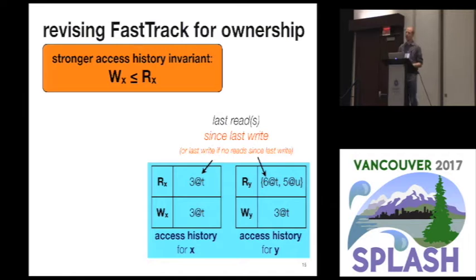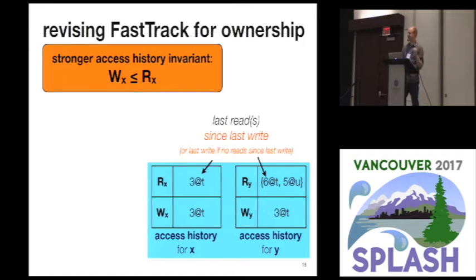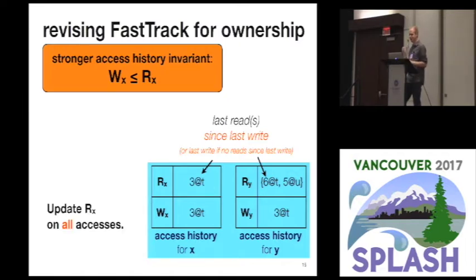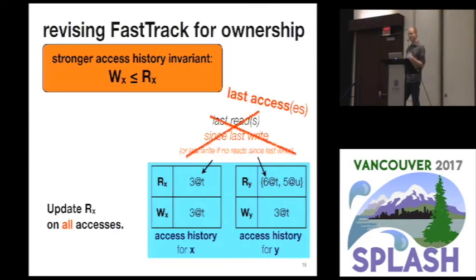Now we're going to revise the way FastTrack checks and updates work just a little bit to promote a stronger access history invariant. We're going to ensure that the last write recorded in any given access history happens-before all of the recorded last reads in that access history. It turns out it's fairly simple to ensure this: we take the policy of updating the last read not just on reads but also on writes. So every time we do any memory access, we record the current logical time as if it's a last read. At this point, those last reads are really last accesses — I'll continue to interchange those terms to stay connected to FastTrack terminology.